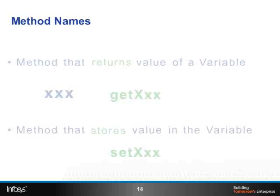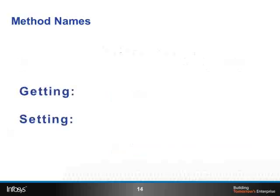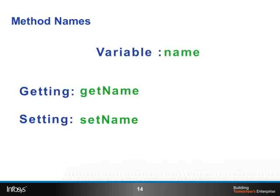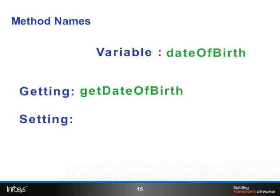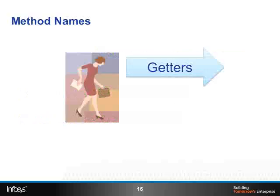The methods for getting and setting the variable name are get name and set name. The methods for getting and setting the variable date of birth are get date of birth and set date of birth. These methods are usually referred to as getters and setters.